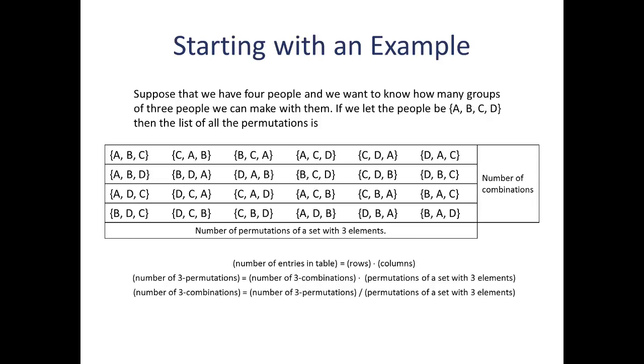First, the number of entries in the table is equal to the number of rows times the number of columns. Now, the number of entries in the table is equal to the number of three permutations. That's the total number of permutations of four elements into a group of three. The number of rows is equal to the number of three combinations. And the number of columns is equal to the number of permutations of a set with three elements.